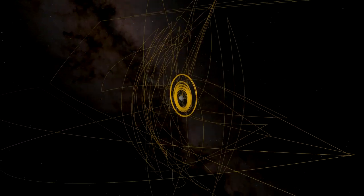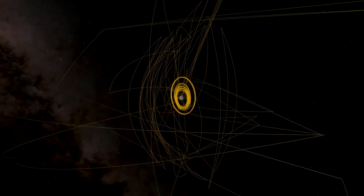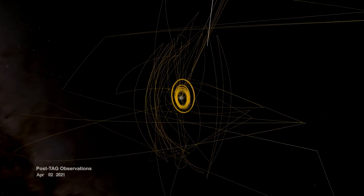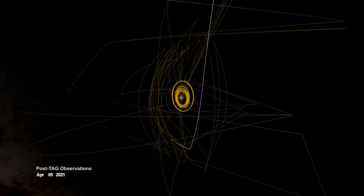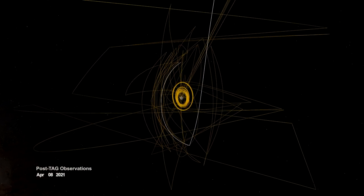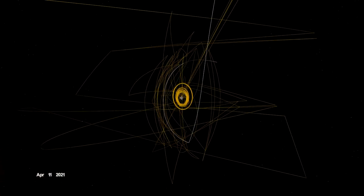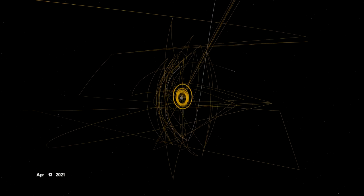They directed it to stow the sample in preparation for return to Earth. Before departing Bennu, OSIRIS-REx was given one final task. On April 7th, it flew over Site Nightingale to observe how the sample collection event had changed the surface.